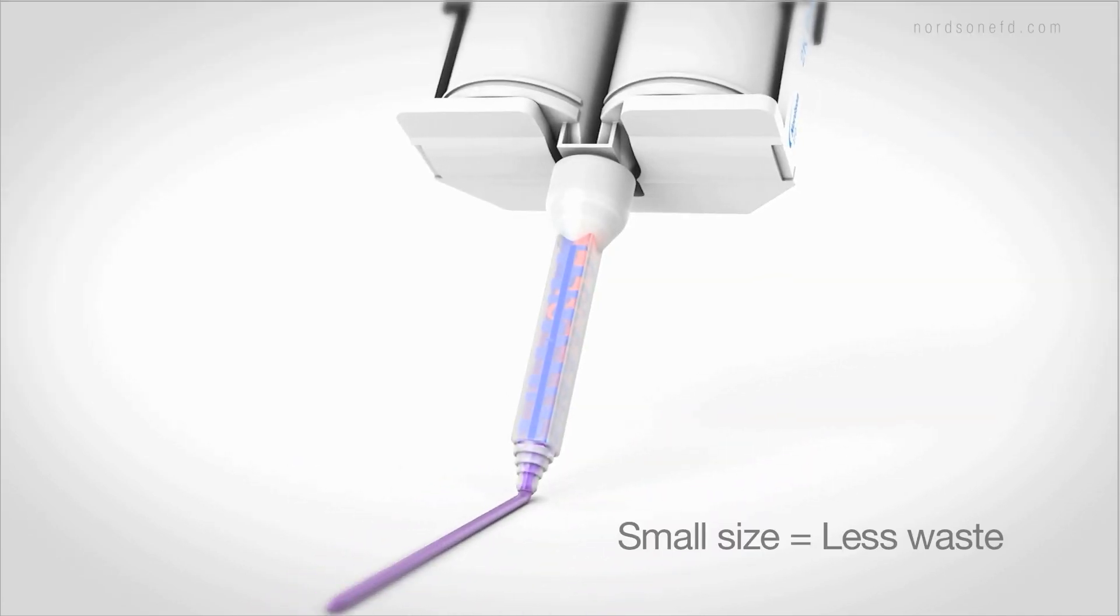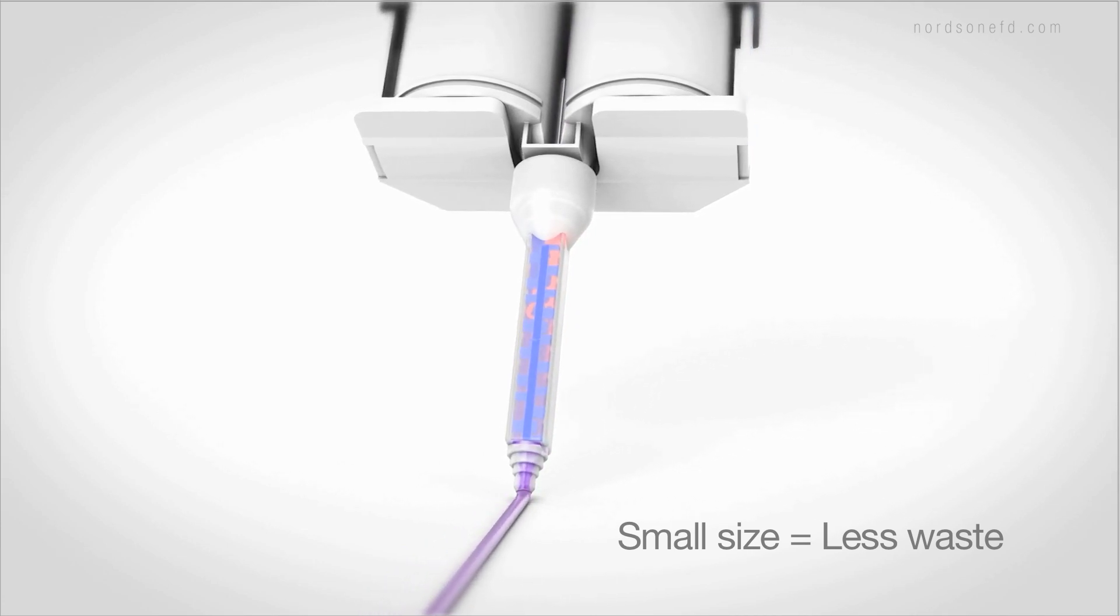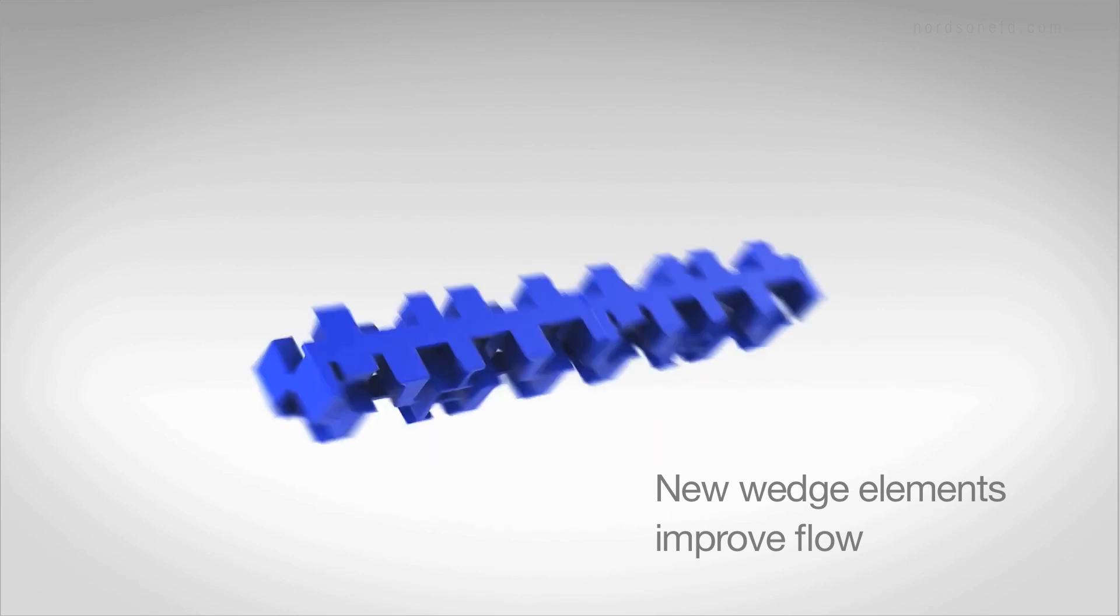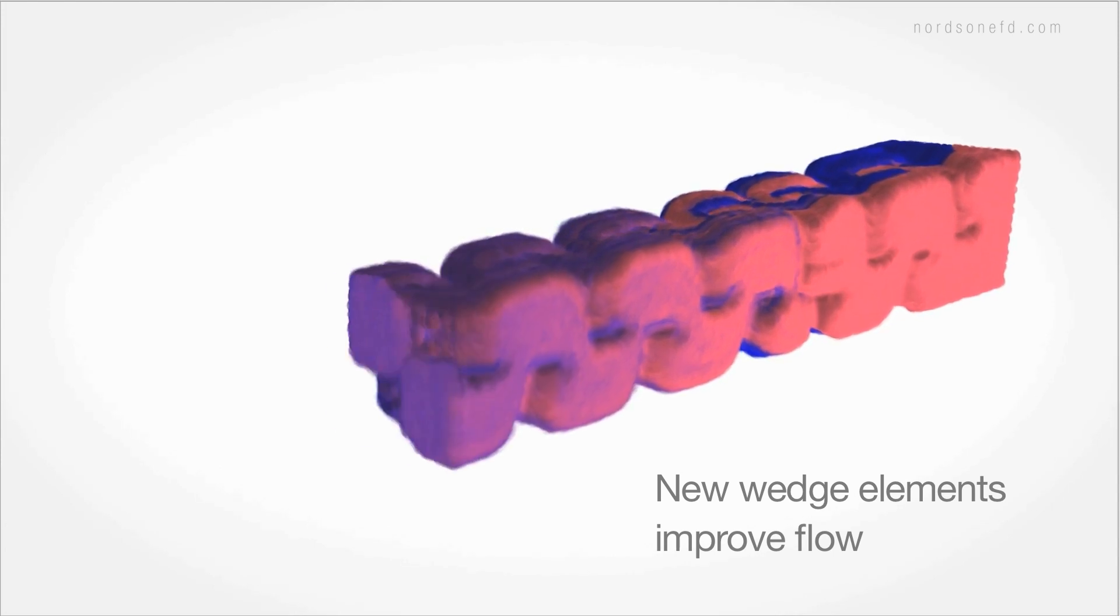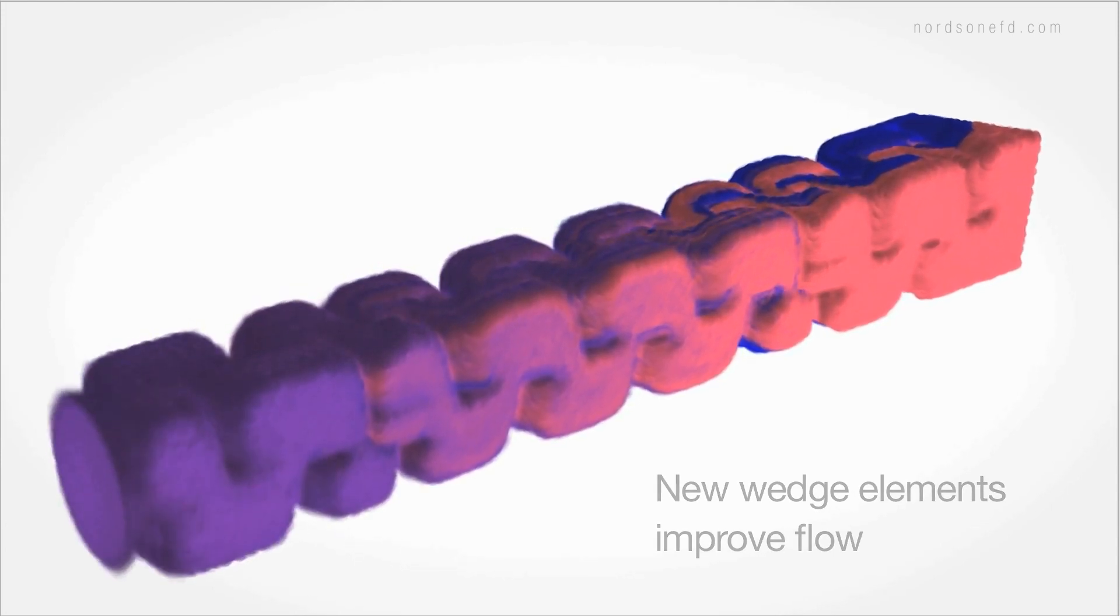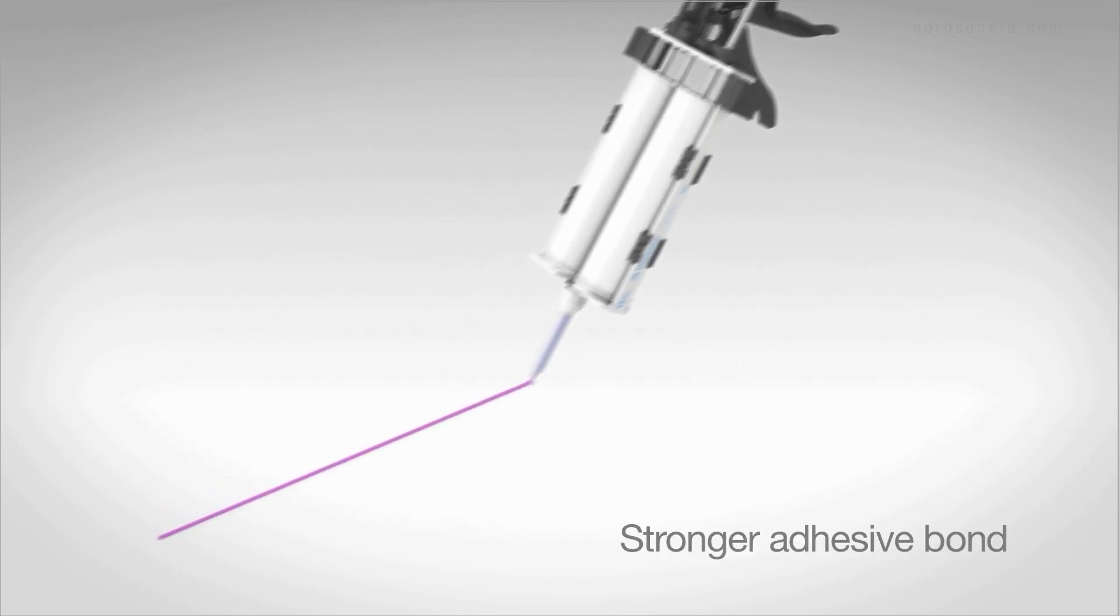OptiMixer's smaller size also means less retained volume, so you cut material waste by up to 30%. Inside the OptiMixer, an innovative new mixing path streamlines material flow, creating a more thorough mix. This creates a stronger adhesive bond in final part assembly.